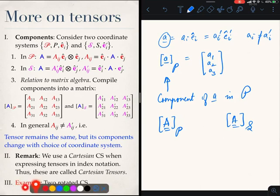Finally, let me do an example. The example will be that we will take two coordinate systems and derive the matrix of the components of the same tensor in these two coordinate systems and we will see that the matrices are different.